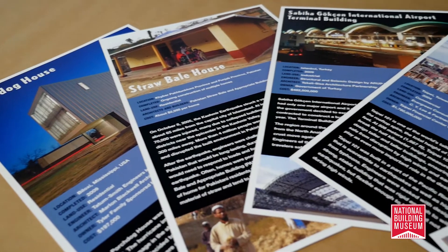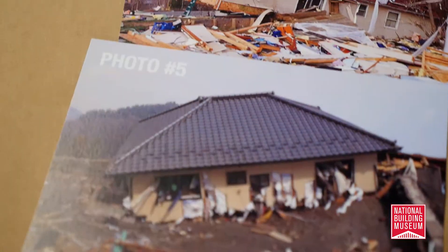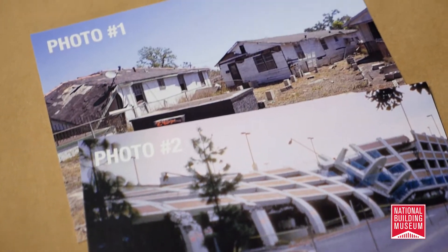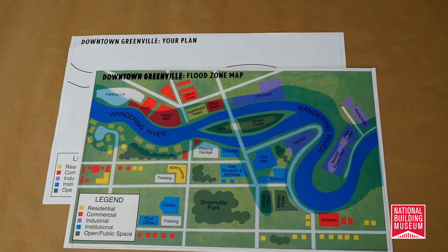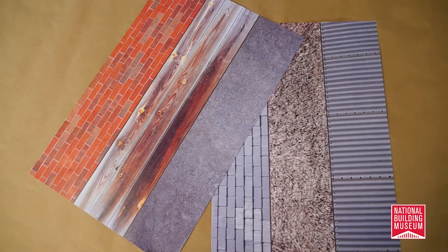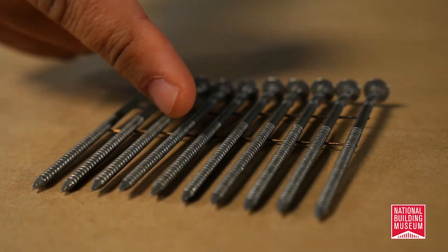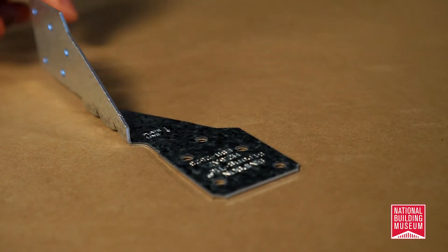These poster-sized foldouts feature studies of resilient structures from around the world. Your students will use these photo investigation cards to complete a visual thinking strategy. This series of flood maps will guide students as they discuss the role of urban planning and land use. We're also providing some craft materials that students will use to complete the hands-on activities. For example, your students can use these pattern sheets when model building in lesson six. And finally, we're including three samples of actual real building materials used to strengthen individual structures.